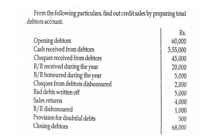From the following information: opening debtors 60,000; cash received from debtors 3,55,000; cheque received from debtors 45,000 — that is also received from debtors regarding their sales; bills receivable received during the year from debtors 20,000; bills receivable honored during the year 5,000; cheque from debtors dishonored 2,000; bad debts 5,000; sales return 4,000.